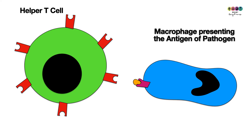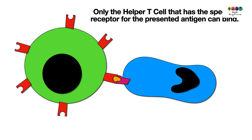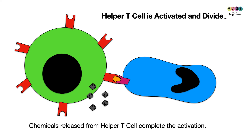Let's go over the activation of helper T cells and killer T cells using pictures to help understand — these pictures are not accurate, just illustrative. Here is a helper T cell with antigen receptors on its surface that will only attach to one particular type of antigen. Here we have a cell — it could be a macrophage — that has engulfed a pathogen and is now presenting that pathogen's antigen on its surface. Because the antigen is recognized by that specific helper T cell, it attaches and stimulates the T cell to release chemicals.